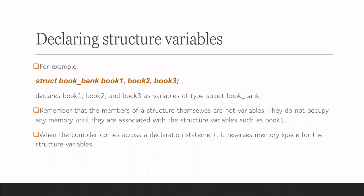We should remember that the members of a structure are not variables. The members of structure book_bank are title, author name, number of pages, and price. They are not variables. Here we define three variables: book1, book2, and book3. Corresponding to each variable, these members will have values — for example, book1 has its own author name, title, pages, and price. When the compiler encounters a declaration statement, it reserves memory space for the structure variables. Memory is allocated only when structure variables are declared.